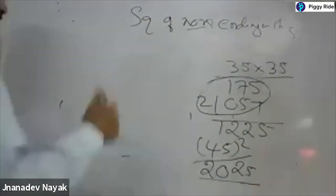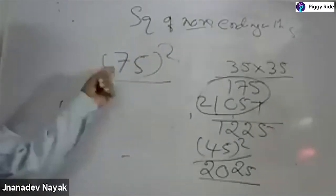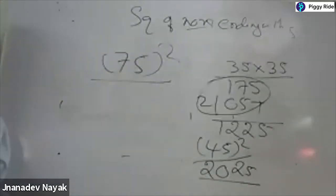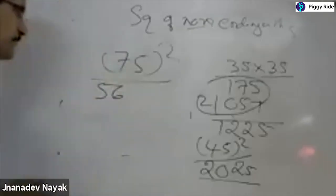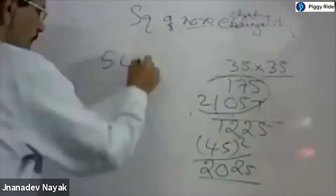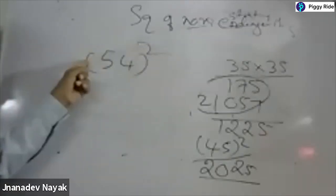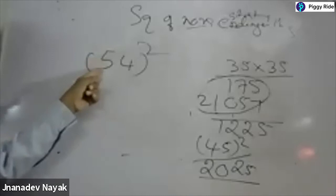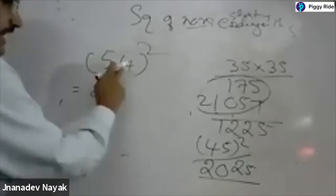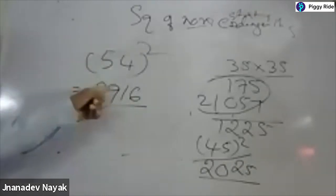Suppose if you want to find 75 squared. What is the number here? 7. Add 1 to that: 8. 8 into 7 equals 56. And square 5: 5 fives are 25. So 75 squared equals 5625. Suppose you want to square 54 — here the last number is not 5, so: 5 fives are 25, add this number 25 plus 4 equals 29, and square the last number 4: 4 fours are 16. So the square of 54 is 2916.